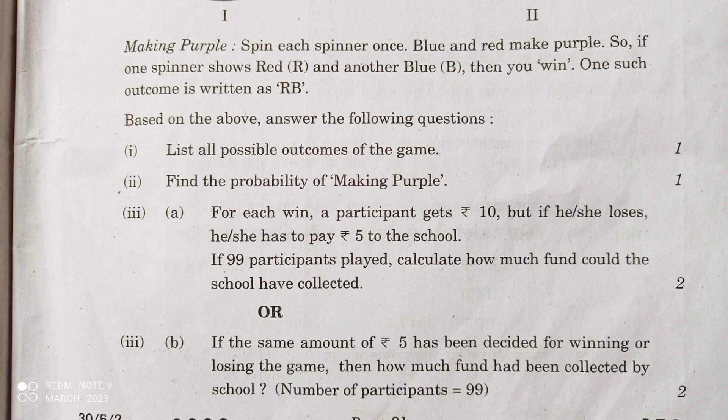The first part is making purple. Spin the spinner once — blue and red make purple. So if one spinner shows red and the other shows blue, then you win. One such outcome is written as RB. Based on the above, answer the following questions.